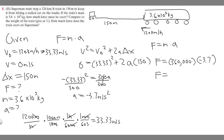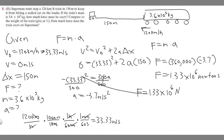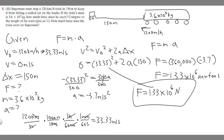That calculation gives us negative 1.33 times 10 to the 6th newtons. Keep in mind the negative sign represents the direction the train is decelerating, but we want the force Superman is exerting, so we take the positive value. The force Superman must exert is 1.33 times 10 to the 6th newtons.